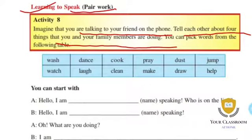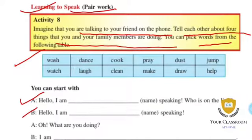You can pick words from the following table. When you start, choose whether you want to start as A or B. A means the first person is talking, B means the second person is talking. When you finish, switch roles and practice the same conversation again.